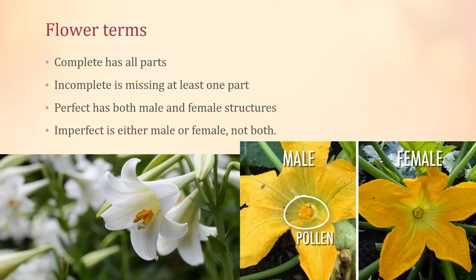Some terms for flower parts: if a flower is complete, it has all four whorls — calyx, corolla, stamens, and carpel. If it is incomplete, it's missing at least one. Lilies, for example, do not have sepals — they have petals, stamens, and a carpel — so they are incomplete because they're missing the sepals.